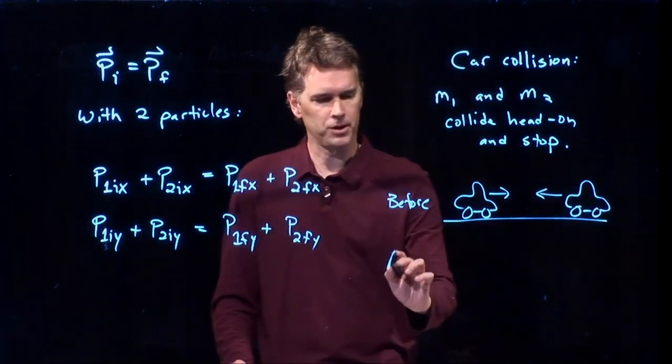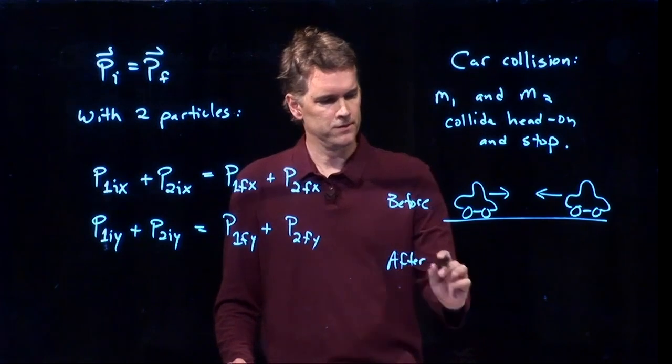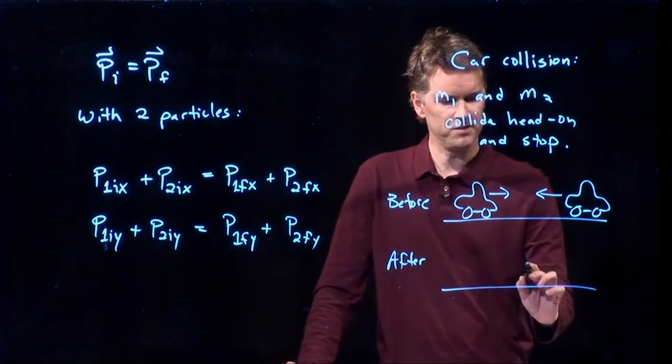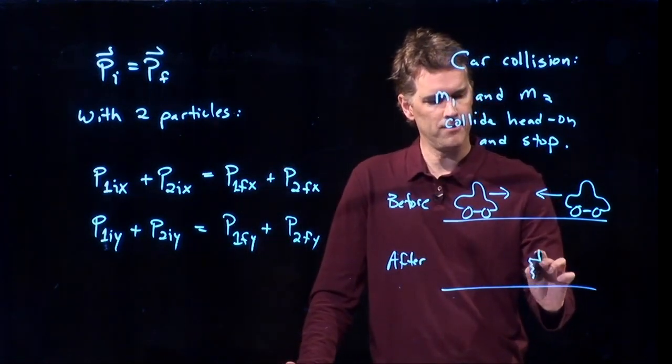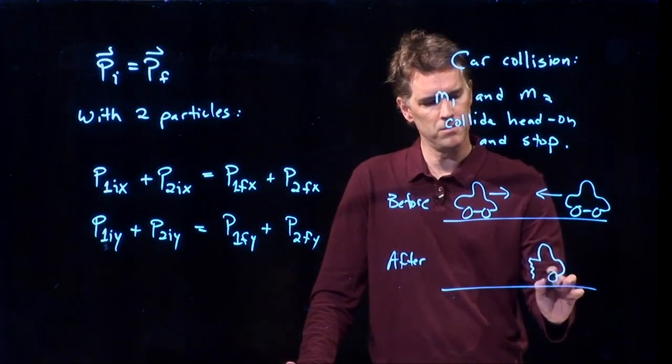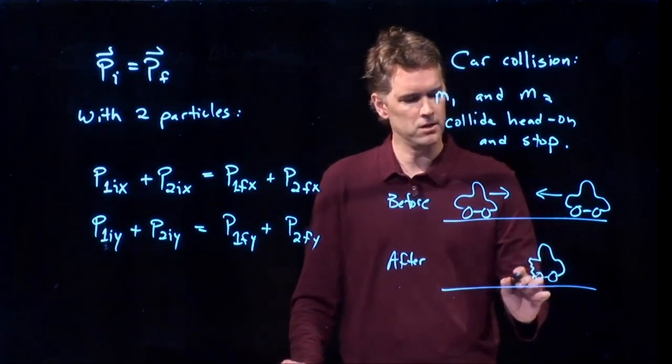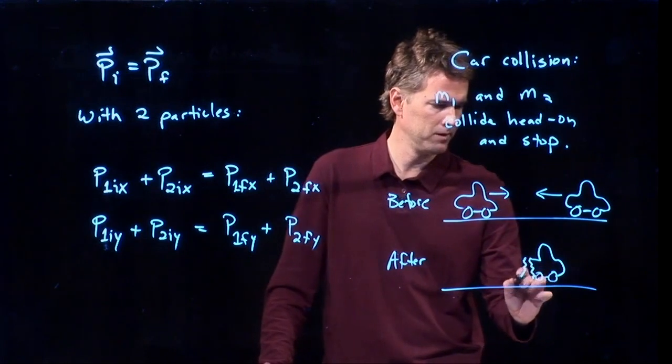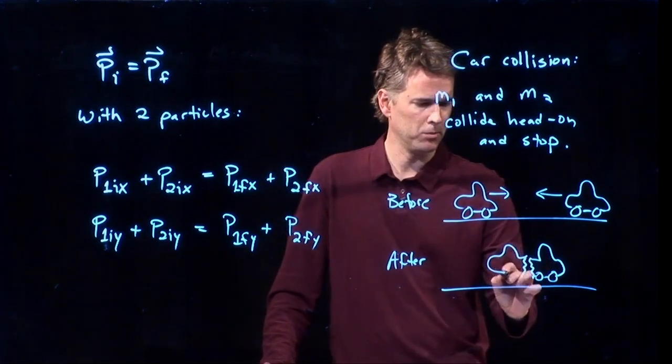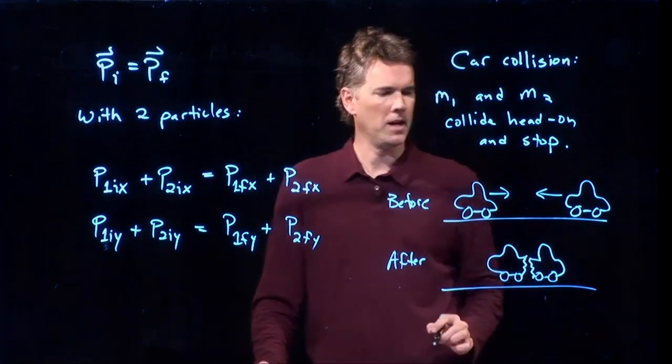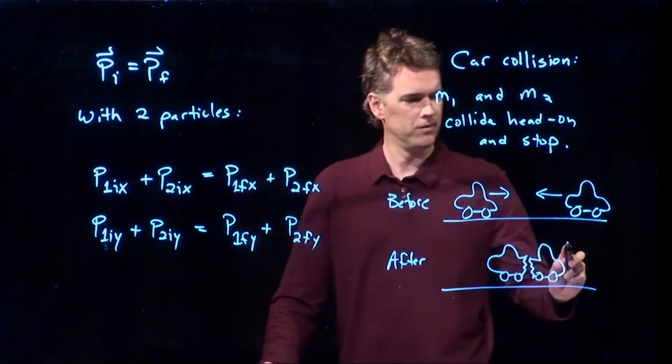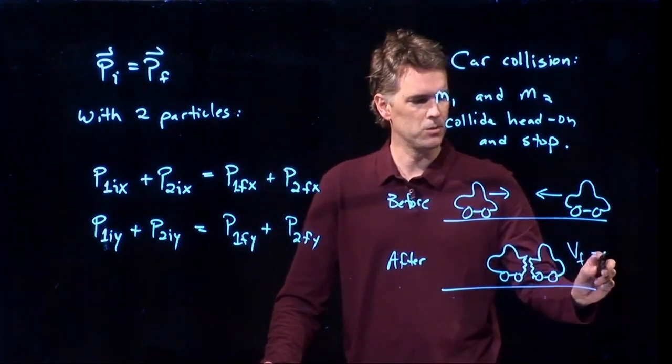And then the after picture, they've come to a stop. We know if they're going to have a head-on collision there's going to be some deformation of the metal. So these things will be bent up and everything will come to a stop. V final is equal to zero.